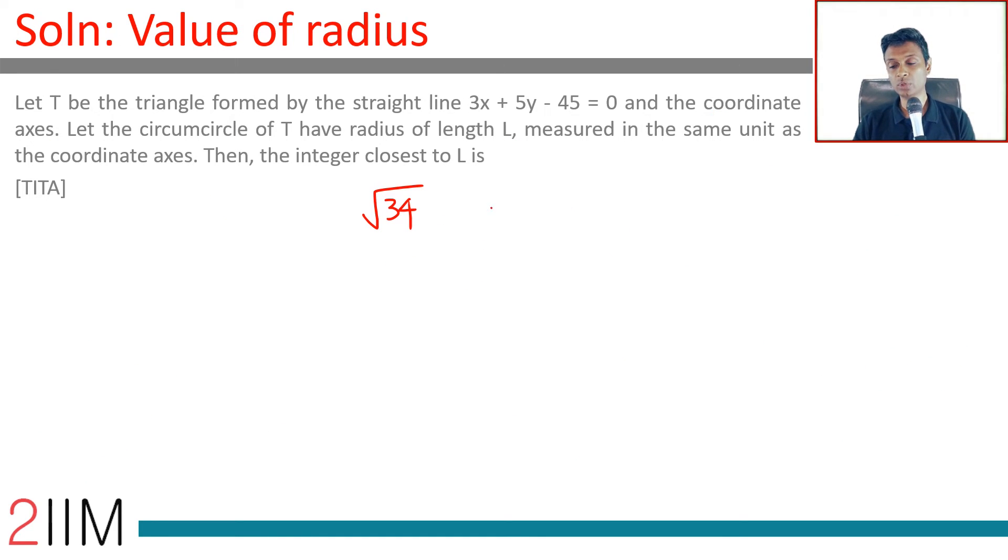Square root of 34 is roughly 6, less than 6. So 3 by 2 times square root of 34 will be less than 9. We need to find it accurately. Maybe it will go below 8.5, in which case the integer closest to L will become 8, not 9.